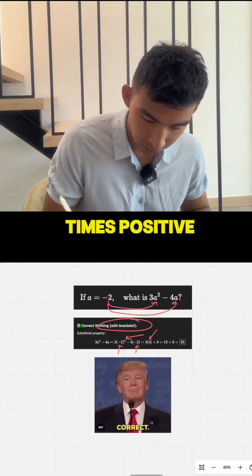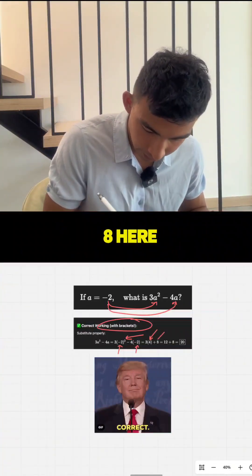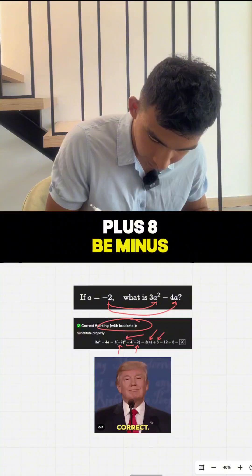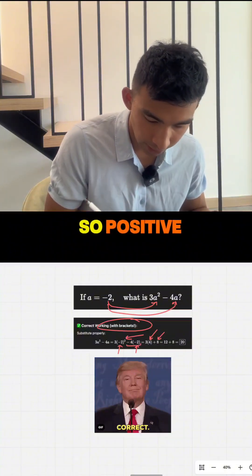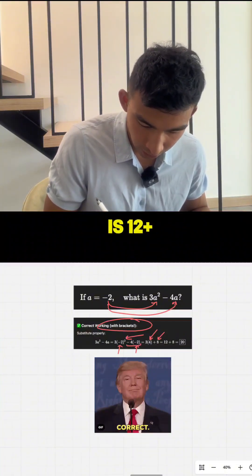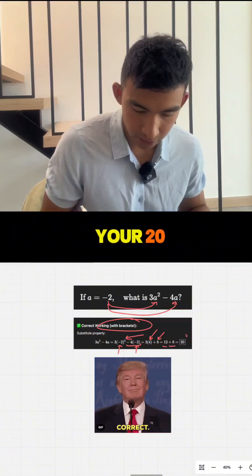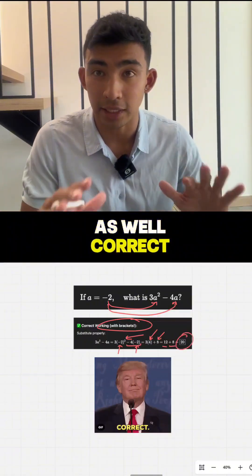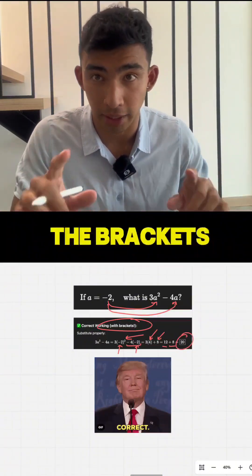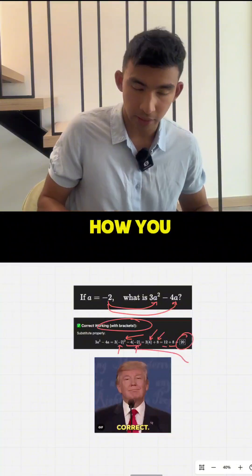It should be 3 times positive 4 plus 8 here because minus 4 times minus 2 is positive 8. So then 3 times 4 is 12, plus your 8 is going to give you 20. So you'll get that as well, correct if you sub it into your calculator with the brackets. So that's very important. That's how you get it correct.